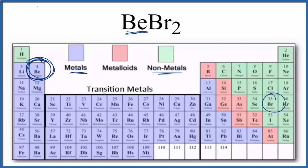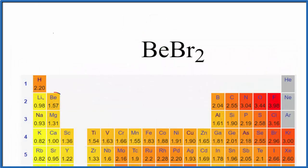So let's look at the electronegativity difference between beryllium and bromide. So here's our beryllium 1.57, bromine 2.96. So 2.96 minus 1.57, we get 1.39. That's the difference in electronegativity between beryllium and bromine.